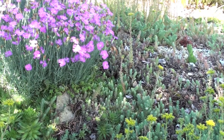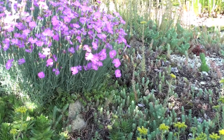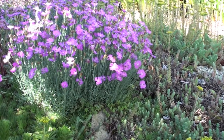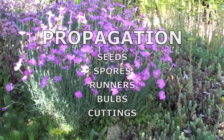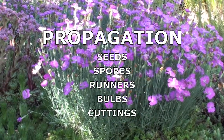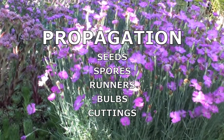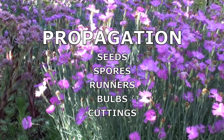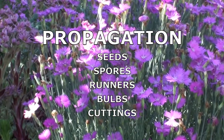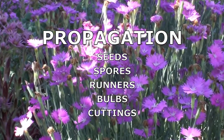All plants need ways to spread and grow new plants, which is also called propagation. Seeds, spores, runners, bulbs, and cuttings are all ways that plants can propagate.